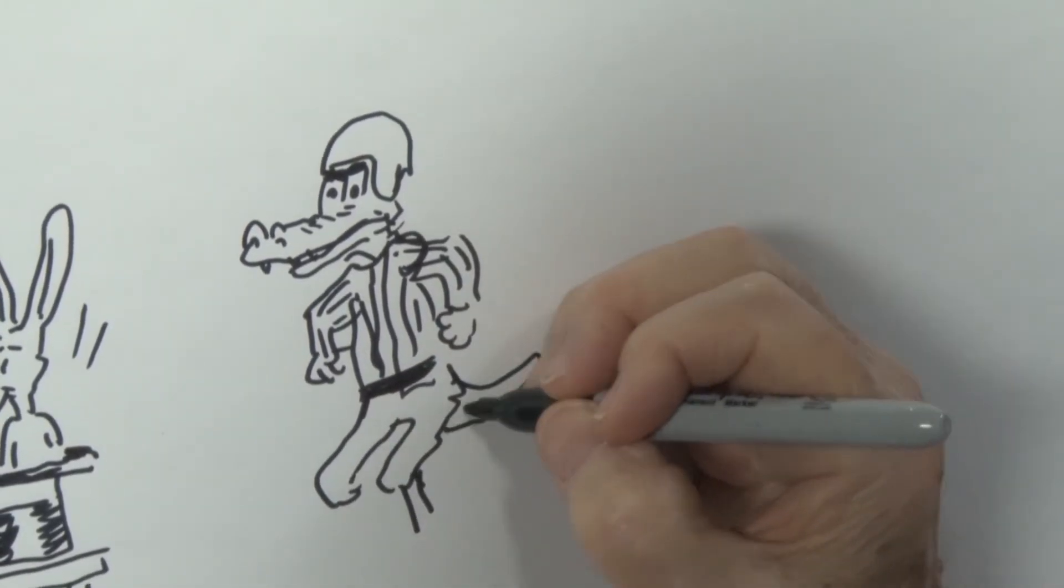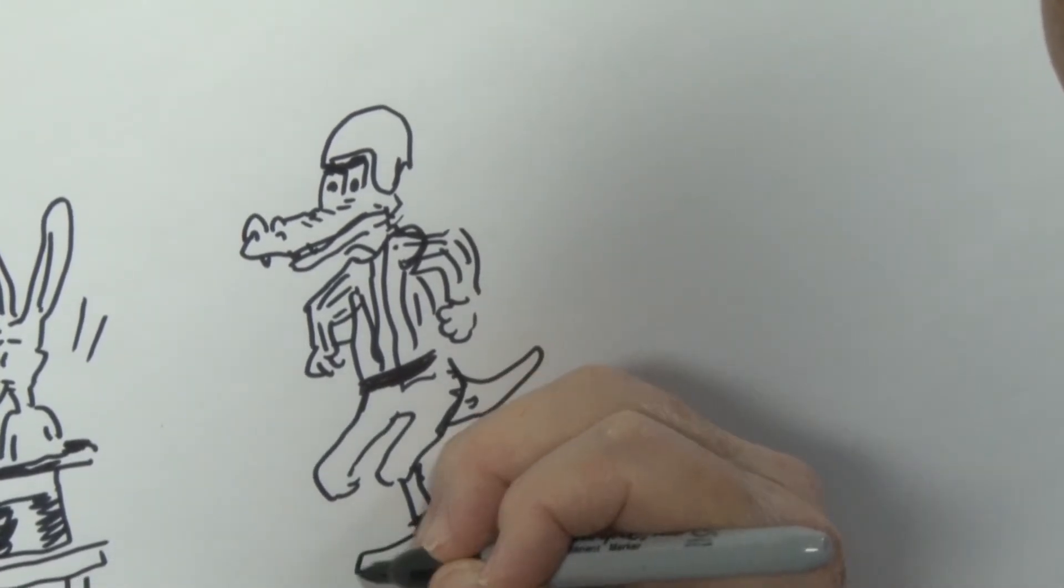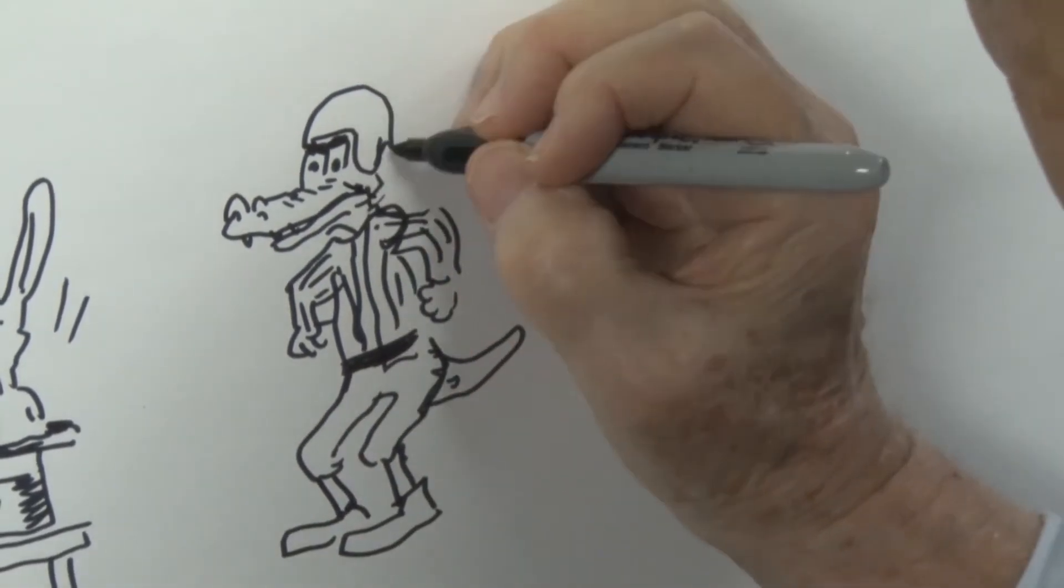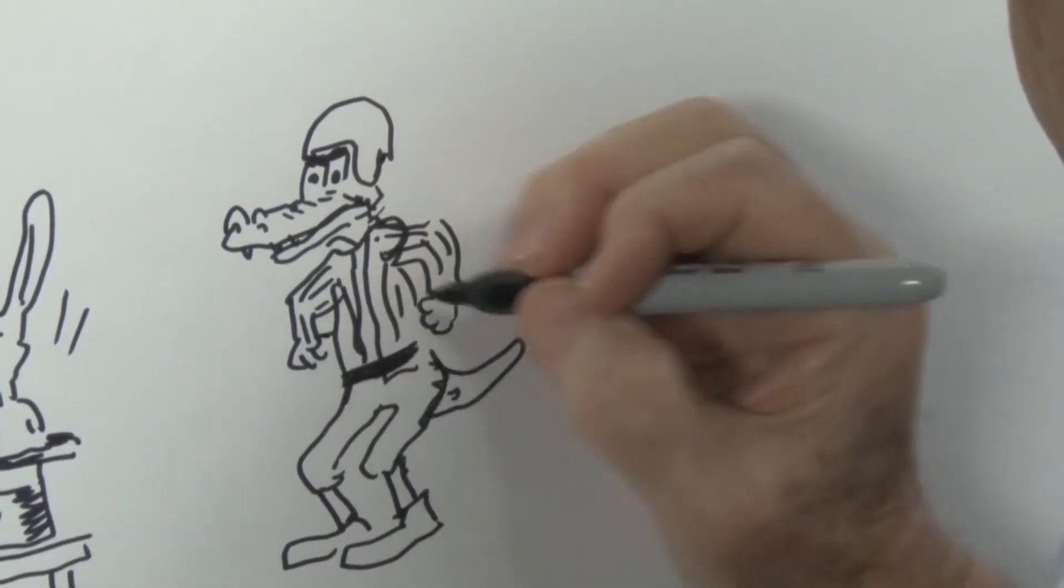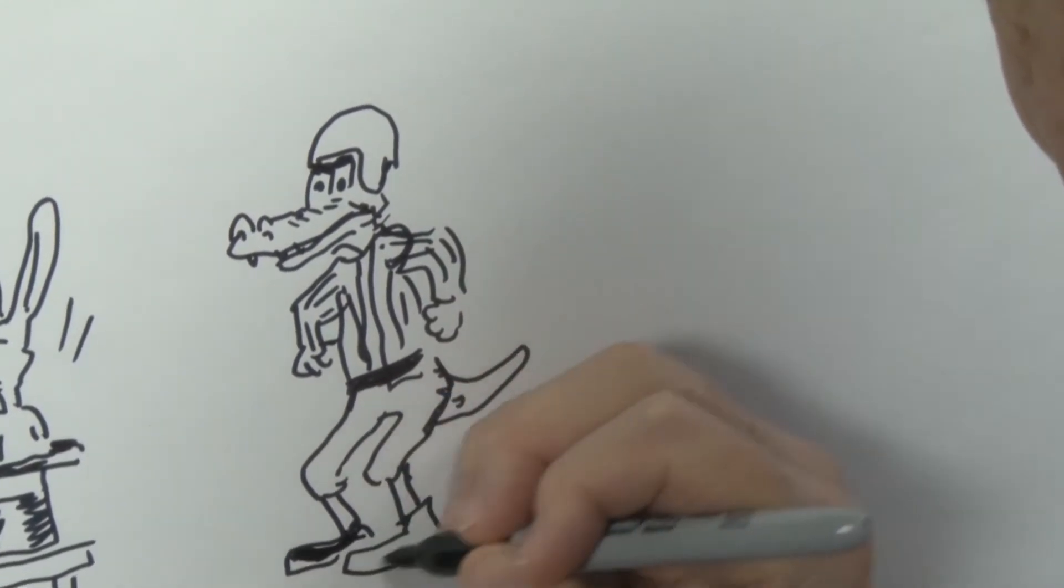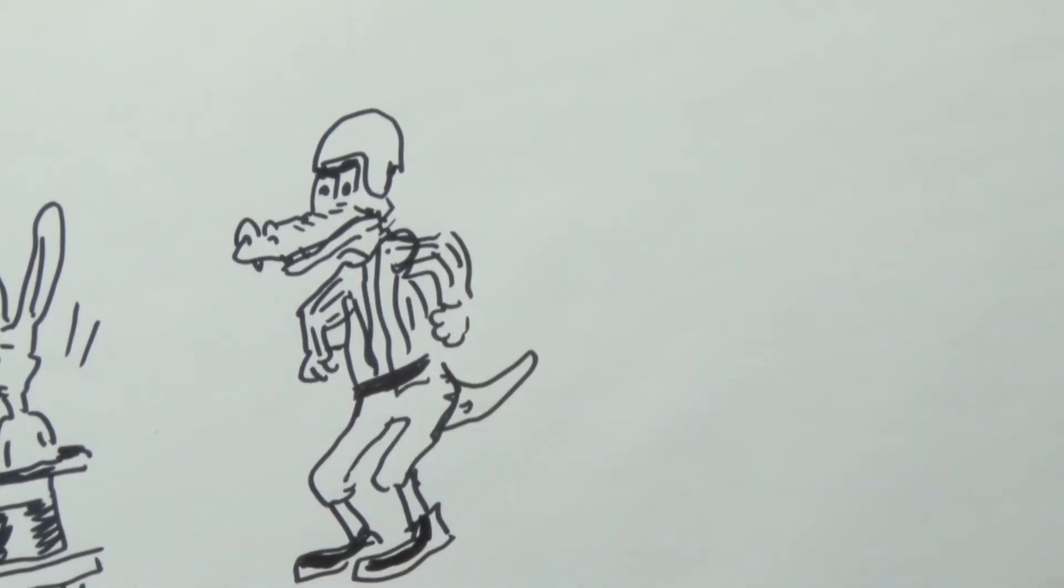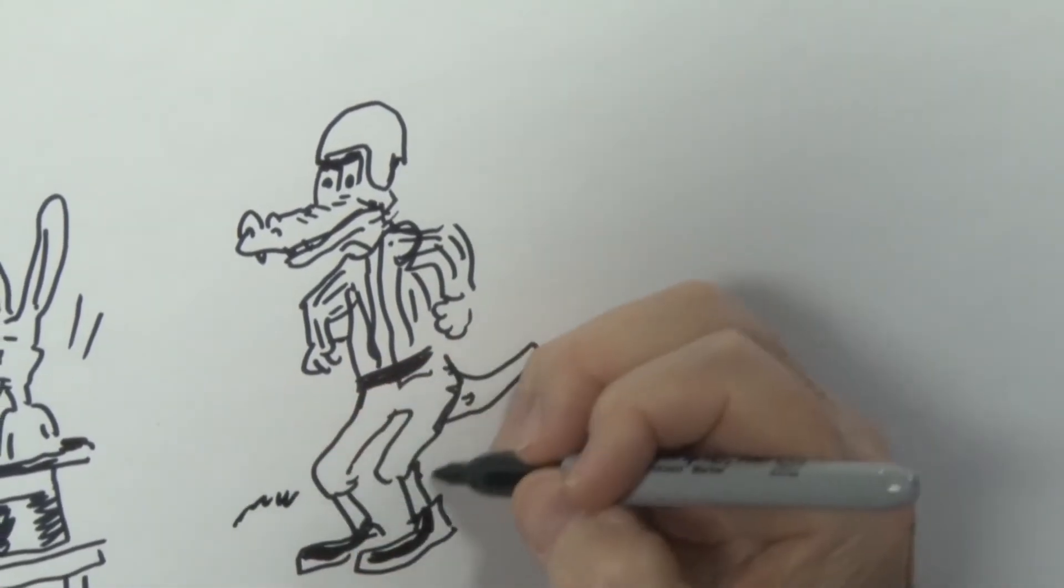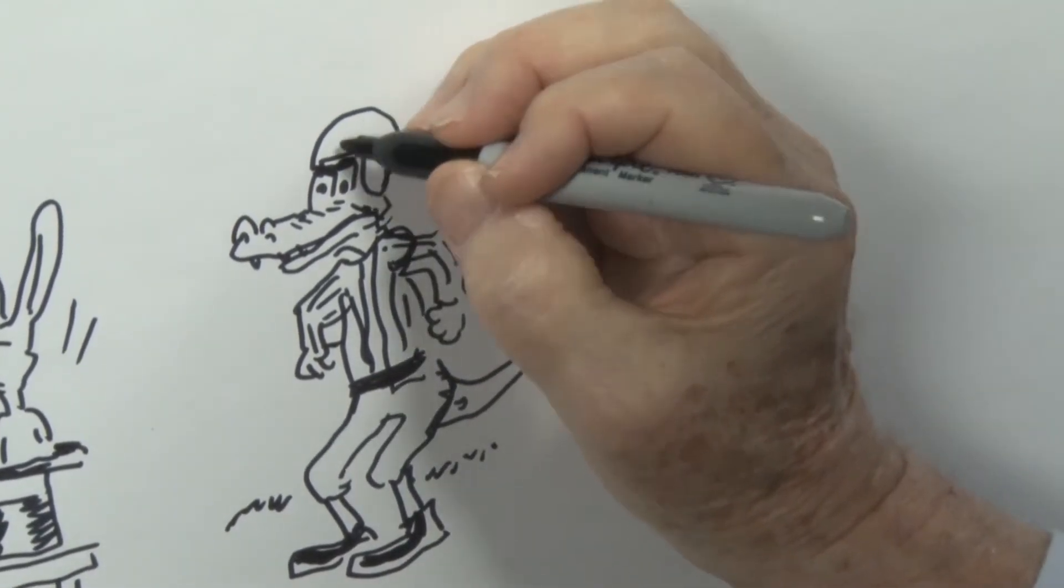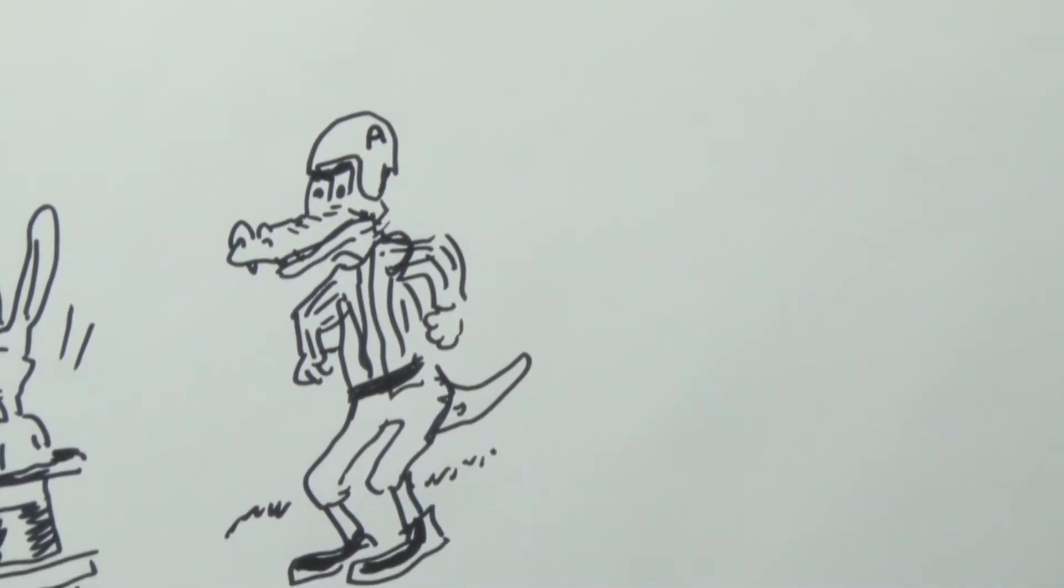And with the alligator's tail, he looks like he's ready for action. Send me in, coach. He says send me in. I'll put an A up there for the Alligator League.